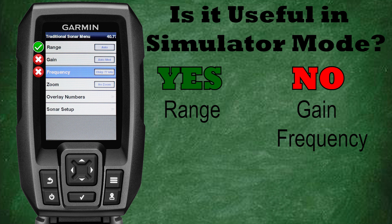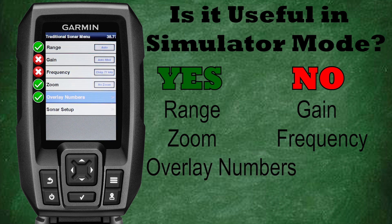Frequency: adjusting the frequency in simulator mode will have no effect on the simulation that's playing, other than showing the selected frequency in the bottom corner of the sonar screen. Zoom: this is a great feature that you can learn to use and master in simulation mode — it's a good place to learn how to use the various zoom options and see which ones may or may not work for you. Overlay numbers: within simulation mode you can adjust your overlay numbers and see how those changes affect your sonar screen, giving you a chance to set the overlays you want and turn off the ones you don't.